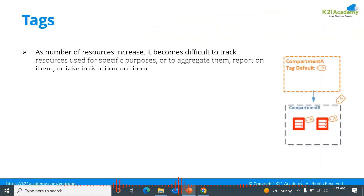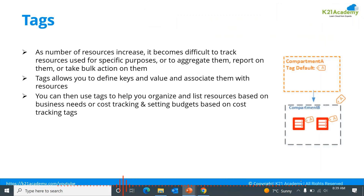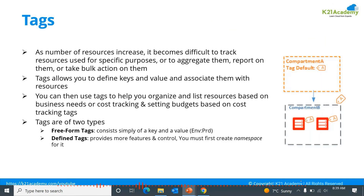Tag-based access control. We have seen that there are many resources which get created. Maybe when you are creating a network, it is going to create the subnets — the default network — it is going to create the VCN, the subnets, the DHCP, the security list and the rules, the internet gateway, the NAT gateway. So multiple things it is going to create. When you are deploying your instances, there will be many resources created and it will be difficult to track those resources.